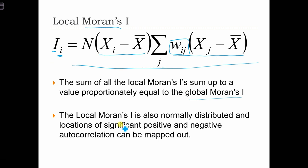Also, the local Moran's I statistic is normally distributed, and therefore we can find specific locations that have significant positive or negative autocorrelation, and we can map out these locations.